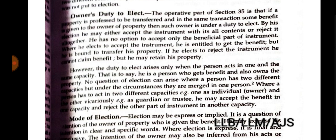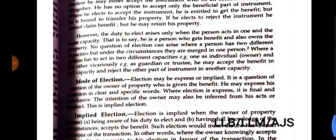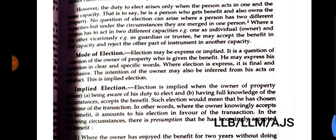Where he elects to accept the instrument, he is entitled to get the benefit but is bound to transfer his property. If he elects to reject the instrument, he cannot gain the benefit but may retain his property. However, the duty to elect arises only when the person acts in two different capacities — that is, he is both the person who gets the benefit and the owner of the property. Where a person acts in two different capacities such as individual owner and guardian or trustee, he may accept the benefit in one capacity and reject the other part of the instrument in another capacity.